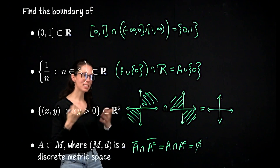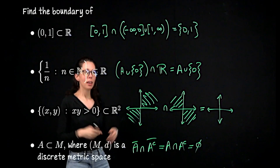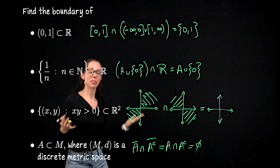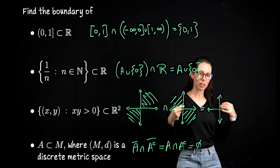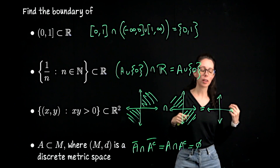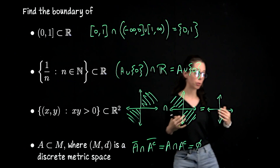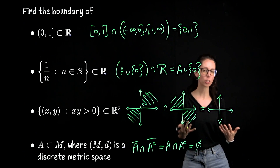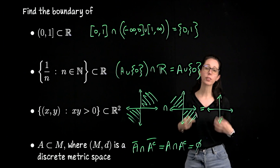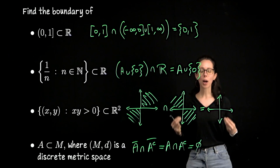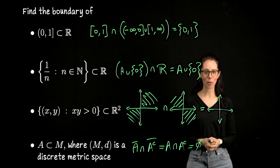Hopefully these seven examples have illustrated how to compute boundaries. I think the definition is great to work with. Sometimes in topology you get a definition — like perhaps that of a closure — where alternative characterizations feel easier to work with. I'm going to give you two alternative characterizations, though I don't think they're easier to work with. You're probably going to reach for these characterizations instinctively anyway, so let's go through them.